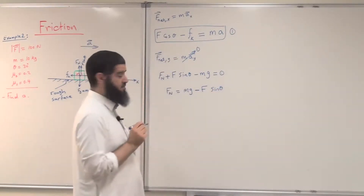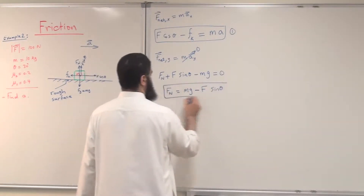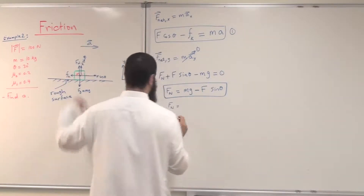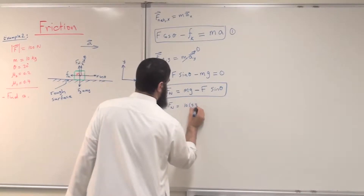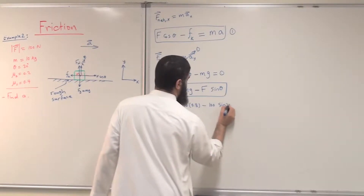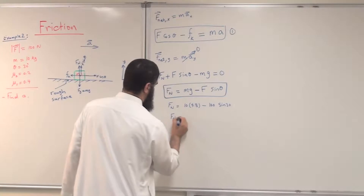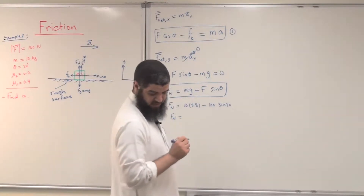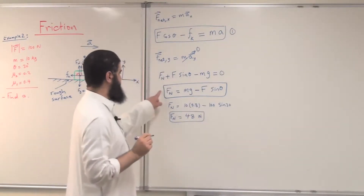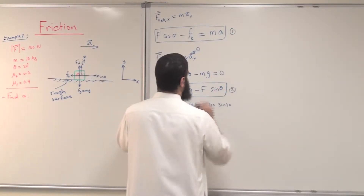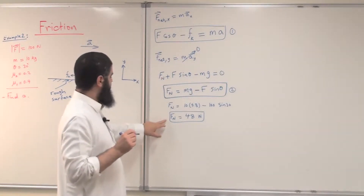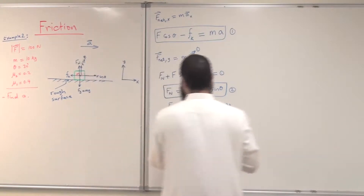Plugging in the numbers: fN = (10 kg)(9.8) − (100 N)(sine 30°). From this we find that the normal force equals 48 Newtons. So we know the normal force from equation two by applying Newton's second law along the y-axis.